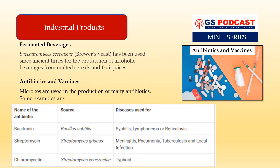Another application of microbes is in the production of antibiotics and vaccines. Antibiotic bacitracin is made by Bacillus subtilis and is used in the treatment of syphilis, lymphonema, or reticulosis, etc. Streptomycin, made by Streptomyces griseus, is used in the treatment of meningitis, pneumonia, tuberculosis, and local infections. Chloromycetine, also made by Streptomyces griseus, is used in the treatment of typhoid.